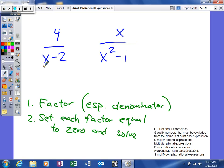On a problem like this, you can see the steps here. First, we're going to factor, especially the denominator. We're going to set each factor equal to zero and solve. Looking at this one right here, the denominator is already factored. When you set the denominator equal to zero and solve, you get x equals two.